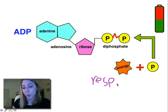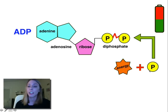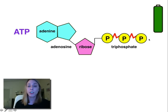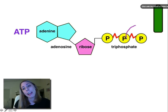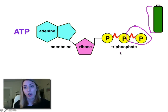So once we add the energy and we have a free phosphate that we add on, then we know that the battery is fully charged again, because we have that energy back into that bond that we can use to fund more reactions and more work.